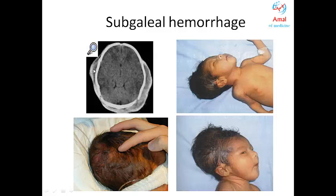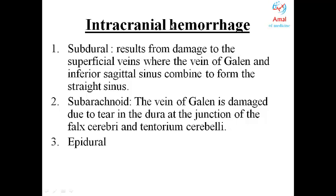Now we move from extracranial to intracranial hemorrhage. Intracranial hemorrhage can be subdural, subarachnoid, or epidural. Epidural hemorrhage is most commonly accompanied by skull fracture leading to rupture of the middle meningeal artery. Subdural hemorrhage is caused by damage to superficial veins and is a slower process than epidural. Subarachnoid hemorrhage occurs when the vein of Galen is damaged due to a tear in the dura at the junction of the falx cerebelli and tentorium cerebelli.